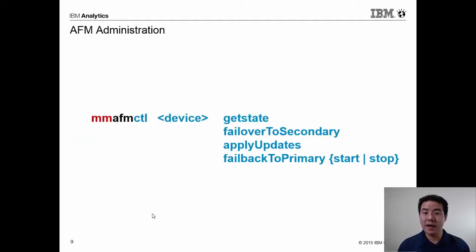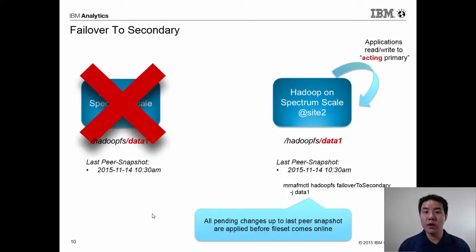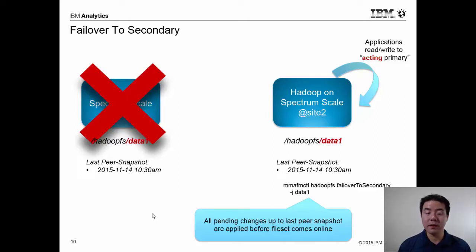To manage this environment, the command is MM AFM CTL — just like other Spectrum Scale commands, it begins with MM. This command has a number of options. When your primary site goes down, on site two you run the command MM AFM CTL failover to secondary. This performs all pending changes required to bring the secondary up to speed to the last known peer snapshot, giving a consistency point. Then you can start your applications to run on the secondary site.